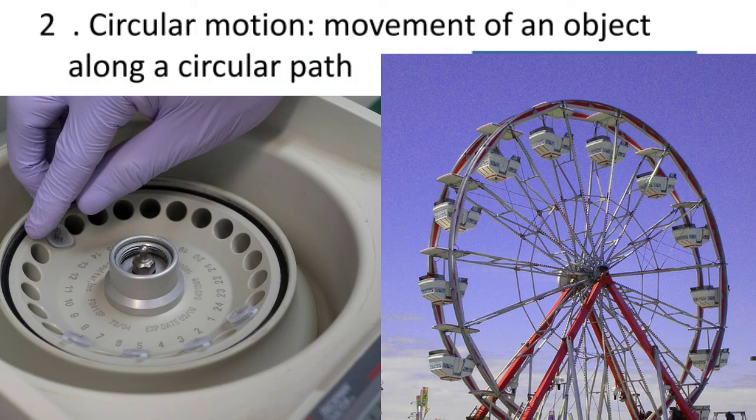The second type is circular motion. The name itself indicates that the object is moving along a circular path. Because it moves in a circular path, it is called circular motion.